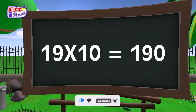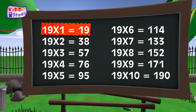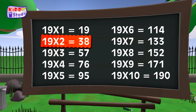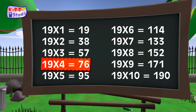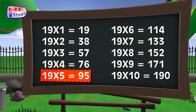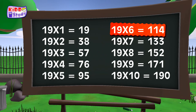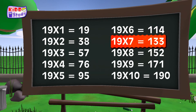One second children. 19×1 are 19. 19×2 are 38. 19×3 are 57. 19×4 are 76.